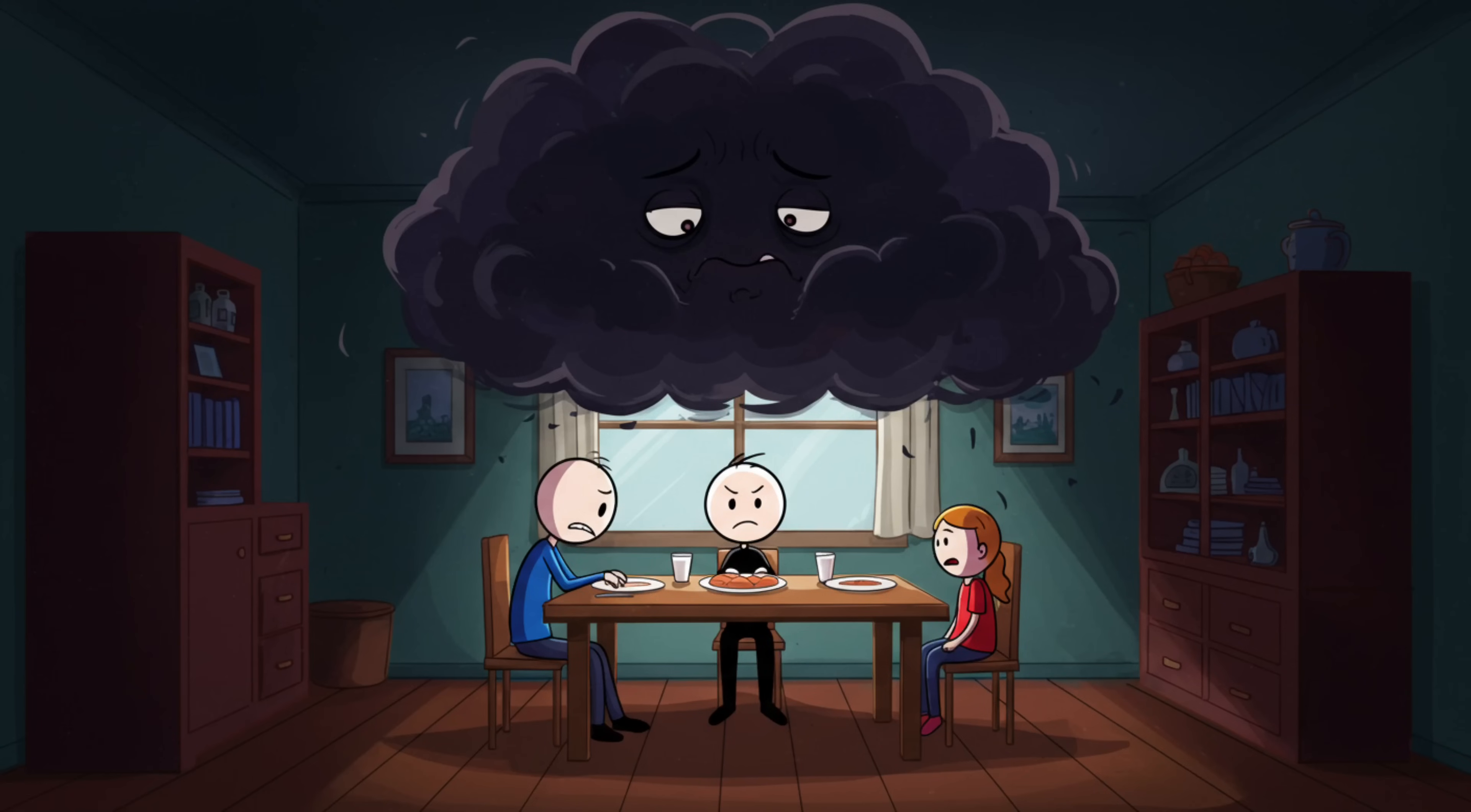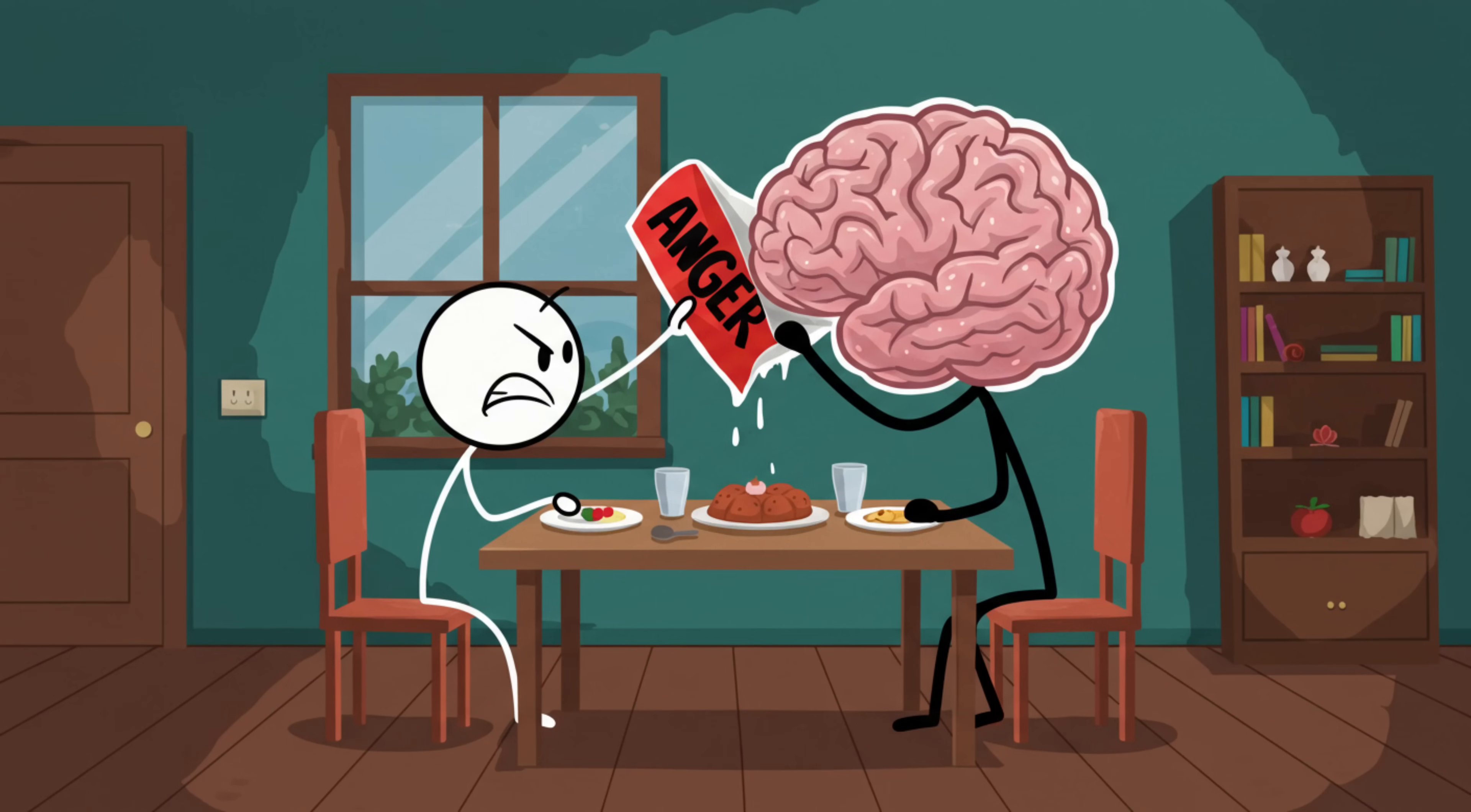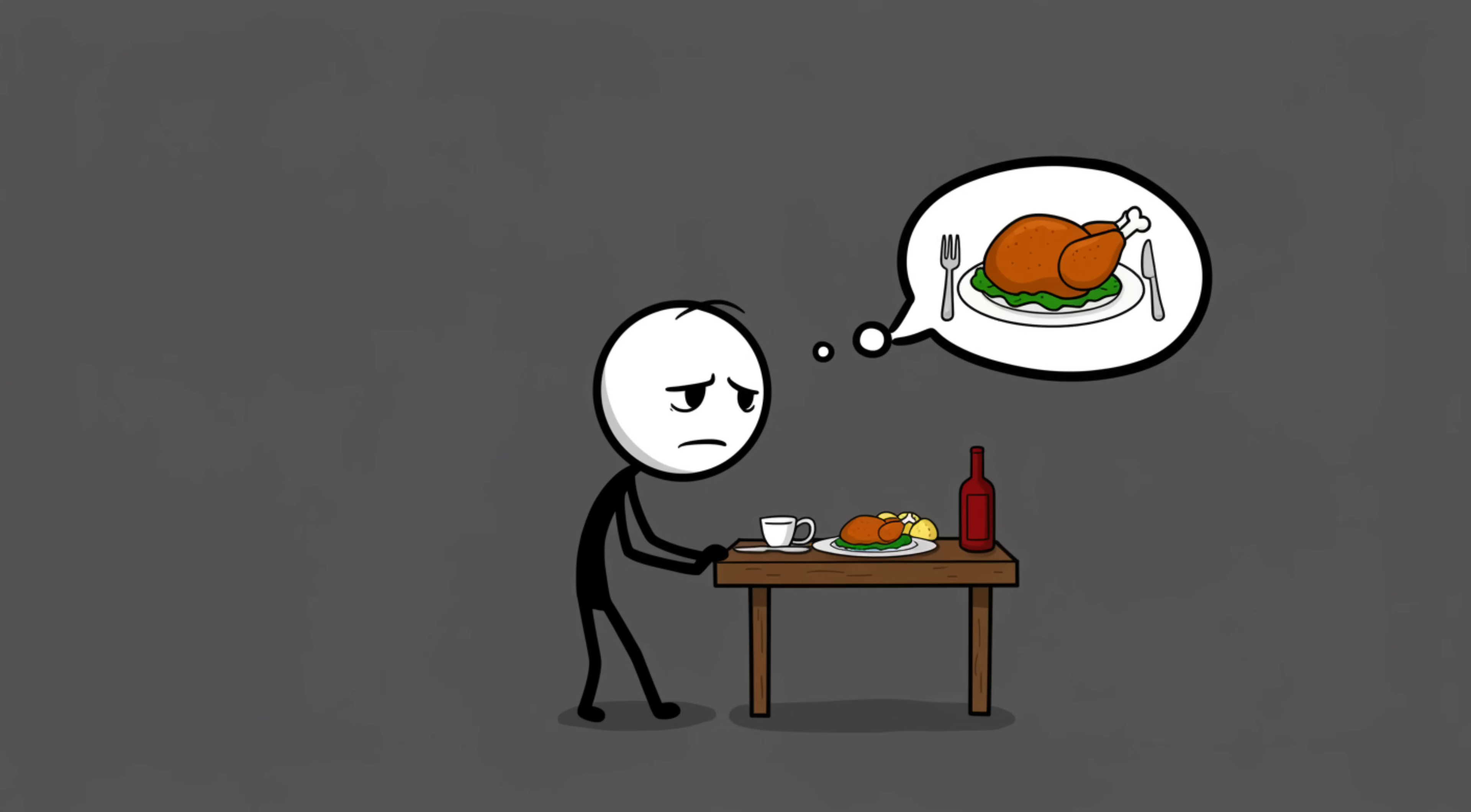Say you're stressed at a family dinner. Your uncle says something mildly dumb about cryptocurrency, but you're already anxious from work. So your brain slaps a giant anger sticker on the whole evening. Later, when you recall dinner, you're like, 'Wow, that night was awful,' even though, technically, it was just some chicken, mashed potatoes, and your uncle pretending to be Elon Musk.